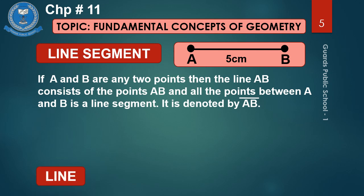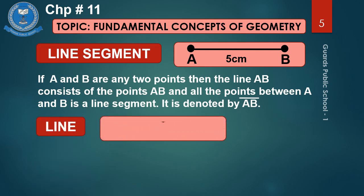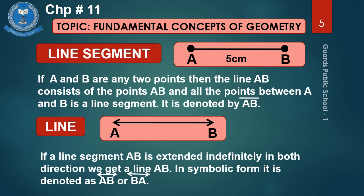Now, the line. You see the diagram here — A and B — but there are arrows instead of end points. If a line segment AB is extended indefinitely in both directions, we get a line AB. In symbolic form, it is denoted as AB or BA.